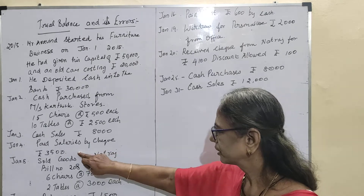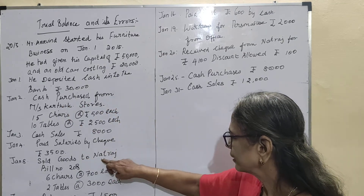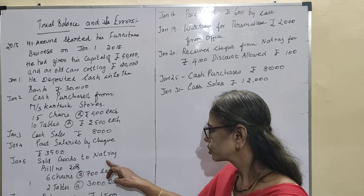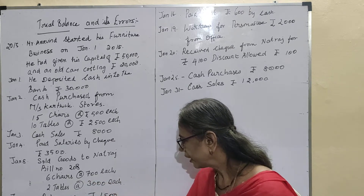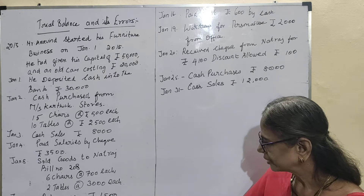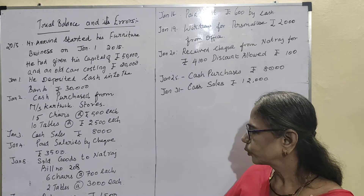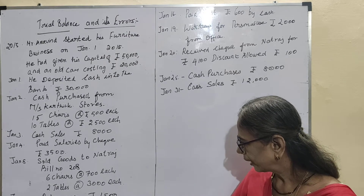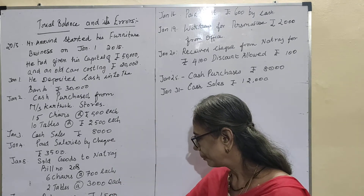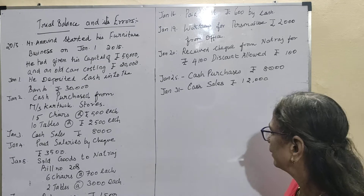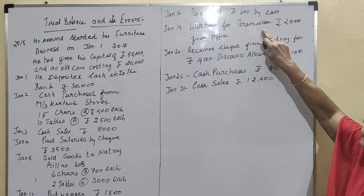Cash purchases from Karthika Stores: 15 chairs at rupees 500 each and 10 tables at rupees 2,500 each. Cash sales rupees 8,000. Paid salaries by check rupees 3,500. Sold goods to Nataraj, bill number 2008 — since a bill number is given, it is a credit sale — six chairs at rupees 700 each and two tables at rupees 3,000 each. Paid wages rupees 1,500.